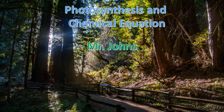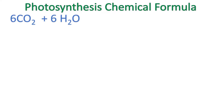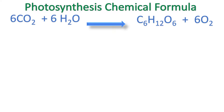Hi, this is Mr. Johns, and we're going to discuss photosynthesis and the chemical equation. The photosynthesis chemical formula says you take six carbon dioxide molecules plus six water molecules, and you're going to yield a sugar molecule plus six oxygen molecules. As you read it: six CO₂ molecules plus six H₂O molecules yields one sugar molecule, which is C₆H₁₂O₆, plus six O₂s.